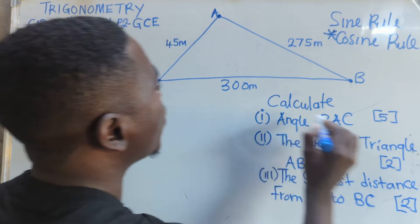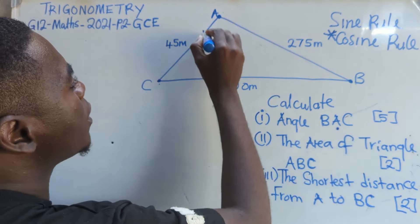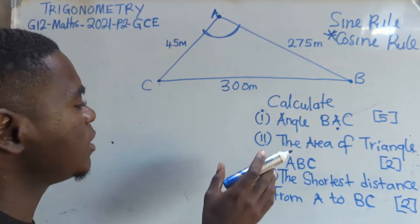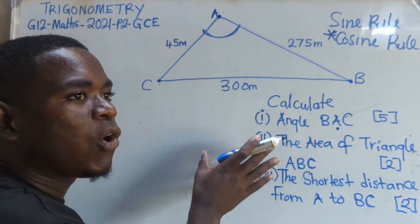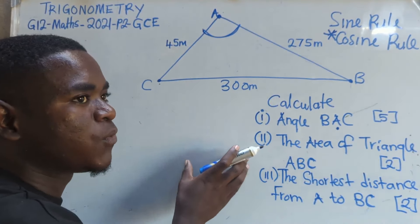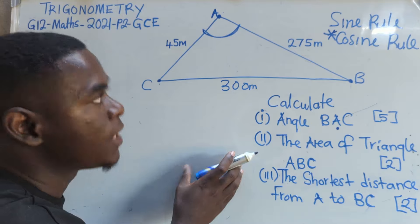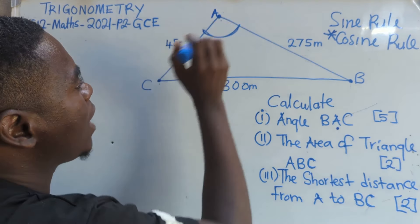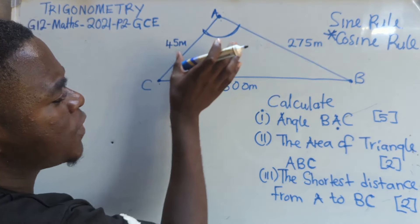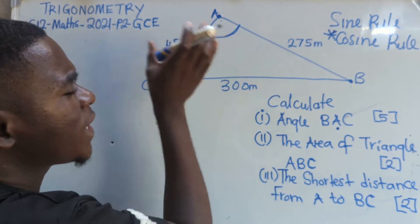Angle A. Where is angle A? Angle A is there. So this is the angle that they want us to find — angle A. So they want us to find angle A.